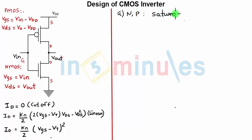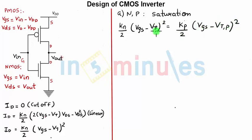Let's quickly write the equation in saturation region for NMOS and PMOS. That is KN by 2 times (VGS minus VT) the whole square for NMOS, KP by 2 times (VGS minus VTP) the whole square for PMOS.